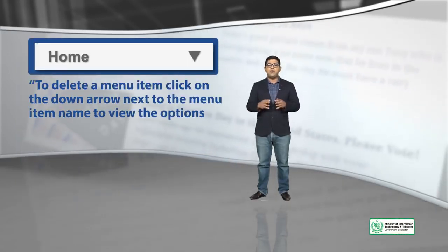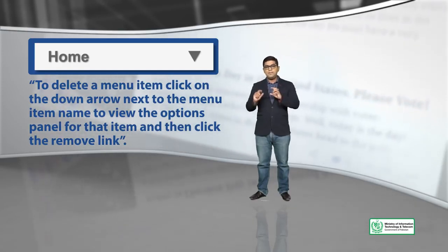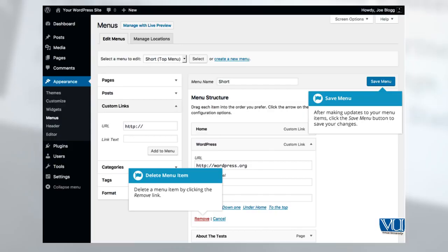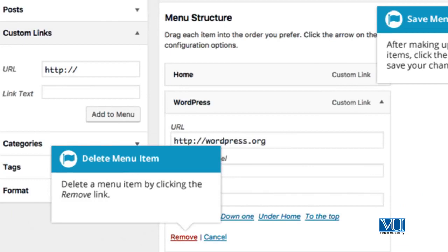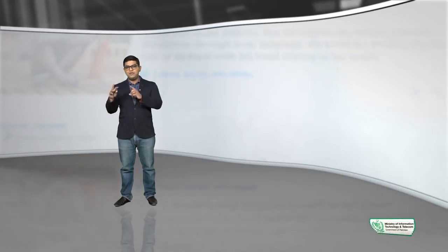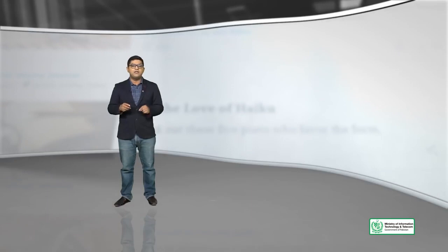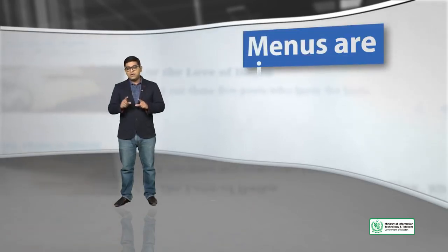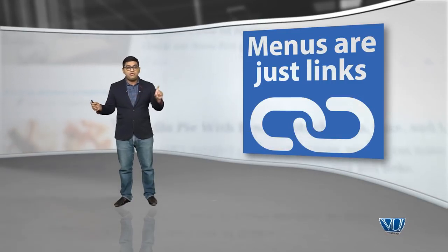So you can remove menus. To delete a menu item, click on the down arrow and remove it. I want to clarify this for beginners: a lot of people get confused. If you delete a menu link, the actual page will NOT be deleted — menus are just links.